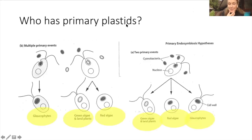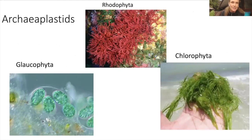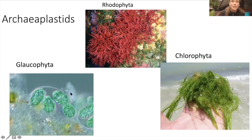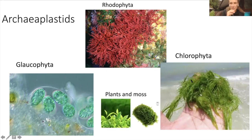Who has primary plastids? The glaucophytes, green algae and land plants, and the red algae. All of these creatures were the outcome of this primary event, and it's called Archaeoplastida or archaeoplastids - like original, oldest plastids. This is the first event. Glaucophytes are microscopic, tiny little aquatic or marine organisms. Rhodophyta are the red algae, and Chlorophyta are the green algae, and plants and mosses - what you're very familiar with.